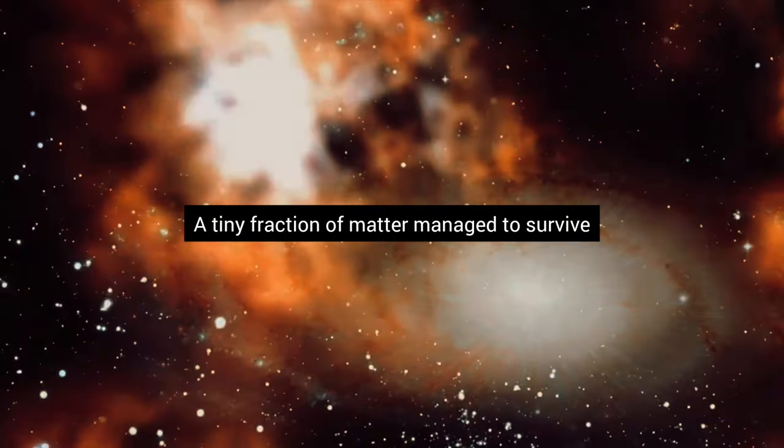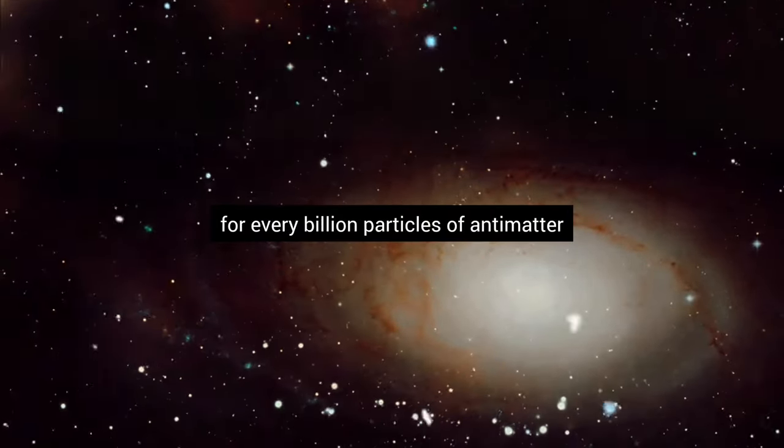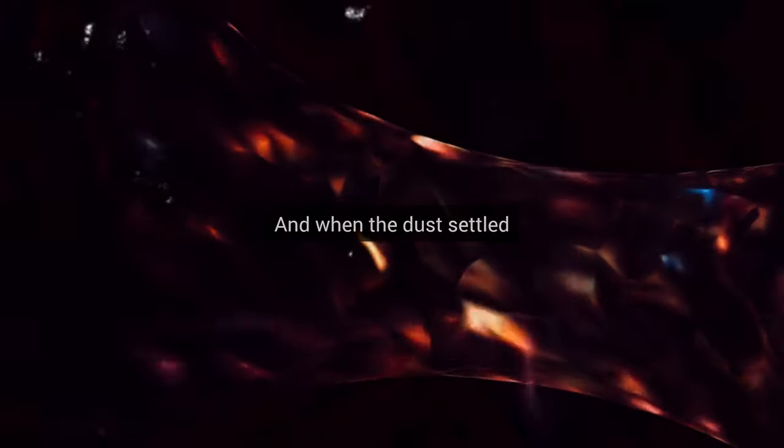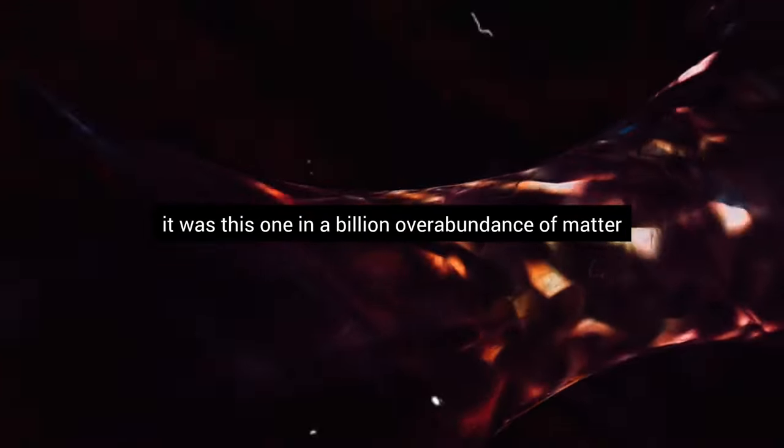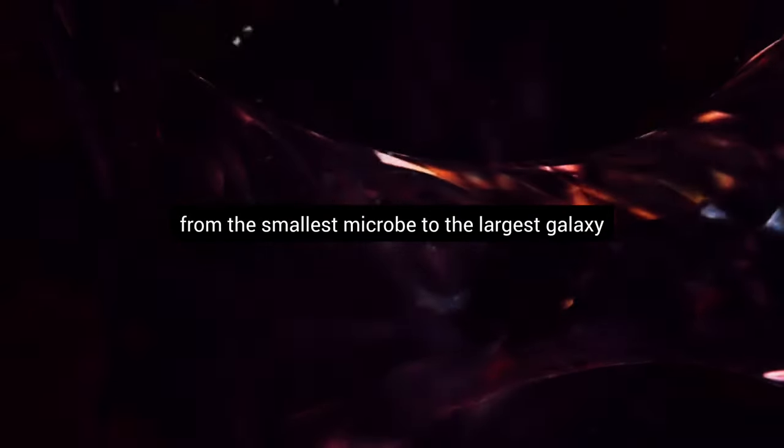A tiny fraction of matter managed to survive against all odds. For every billion particles of antimatter, there was a billion and one particles of matter. And when the dust settled, it was this one in a billion overabundance of matter that formed everything we see in the universe today, from the smallest microbe to the largest galaxy.